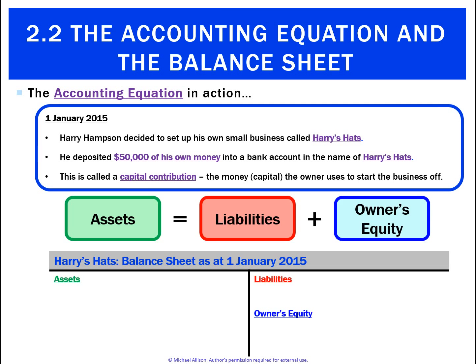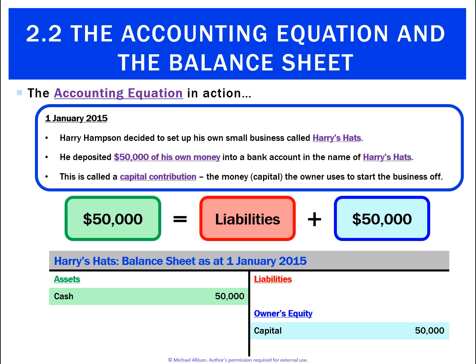So we've got the accounting equation: assets equals liabilities plus owner's equity. With this transaction, the business now has $50,000 of assets, and the other effect is it now has $50,000 of capital. You can see the two sides of the balance sheet balance, reflected in the accounting equation — assets of $50,000, owner's equity of $50,000, and liabilities of zero.